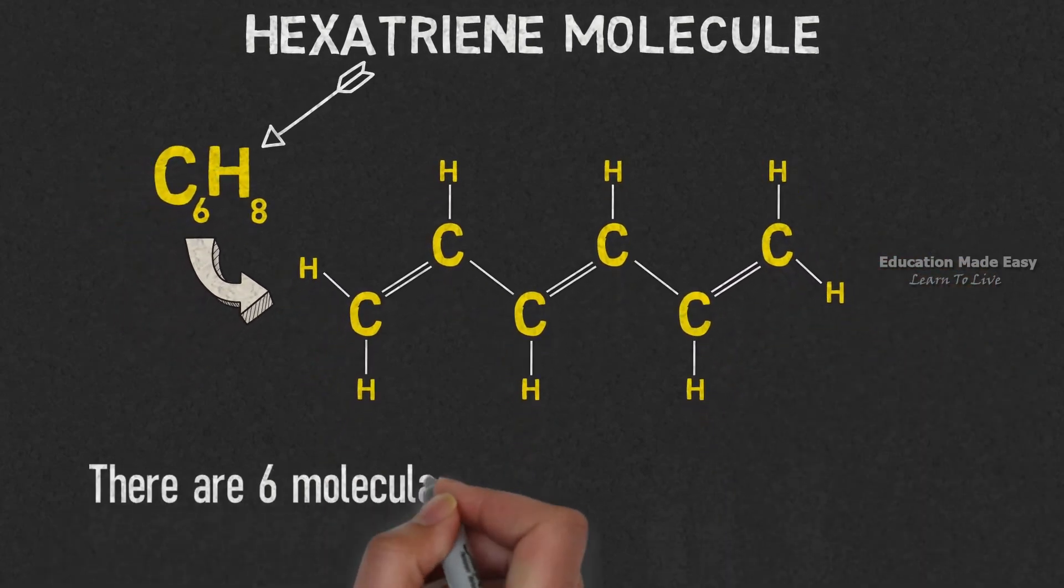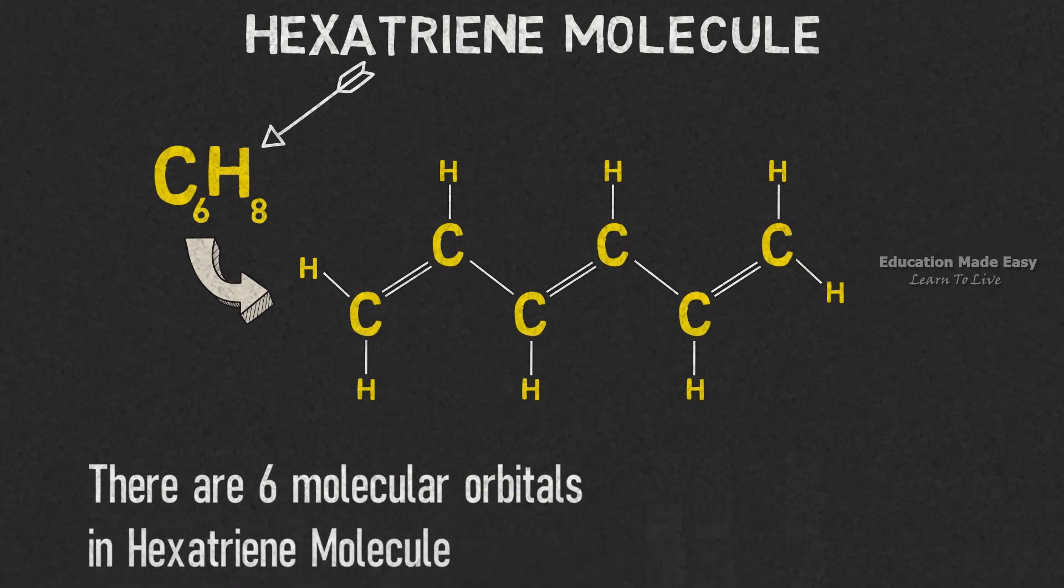There are six molecular orbitals in hexatriene molecules arranged in two groups. Pi1, Pi2, and Pi3 are the first group and Pi4 star, Pi5 star, and Pi6 star belongs to the second group.